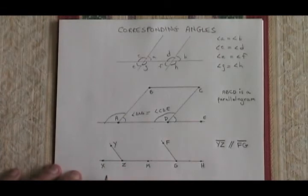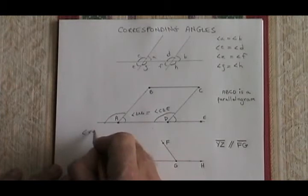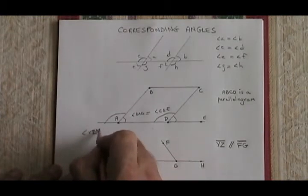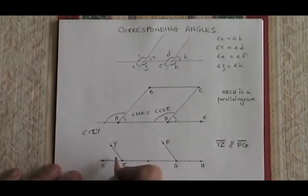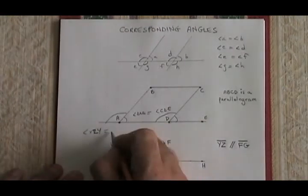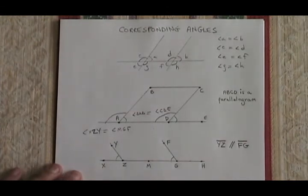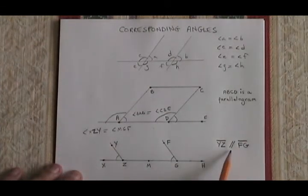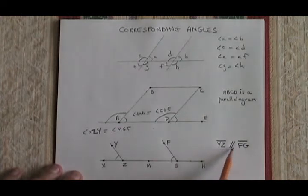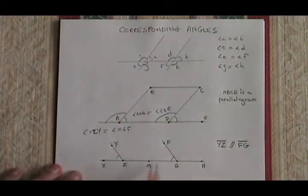In this situation, I can see that angle XZY must be corresponding to angle MGF. How do I know this is true? Because over here I have this symbol that says segment YZ is parallel to segment FG. Since I know that they are parallel and they cross the same line,